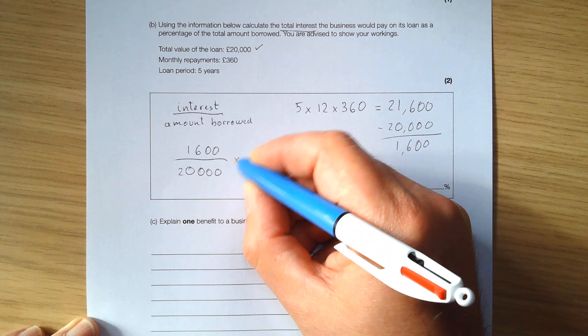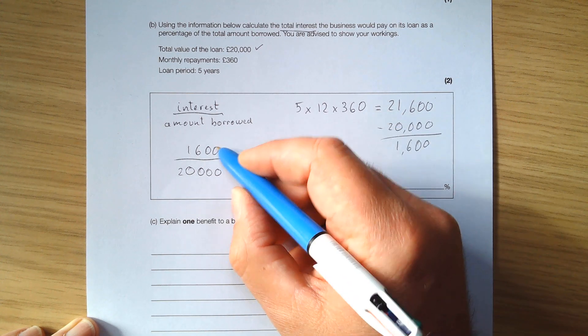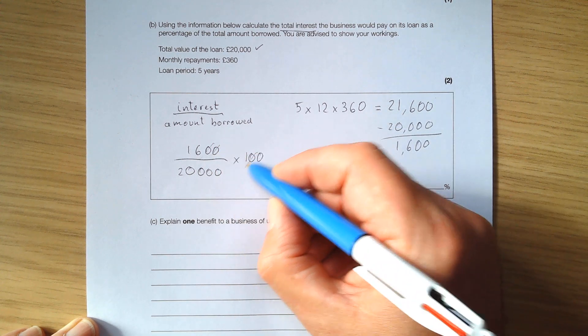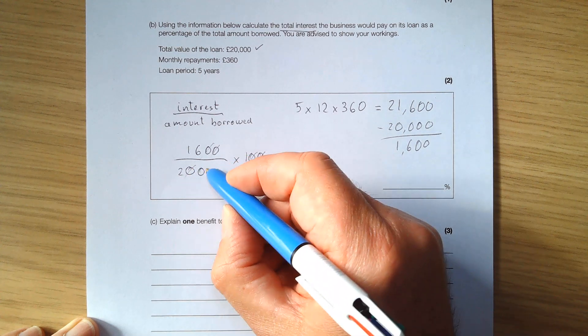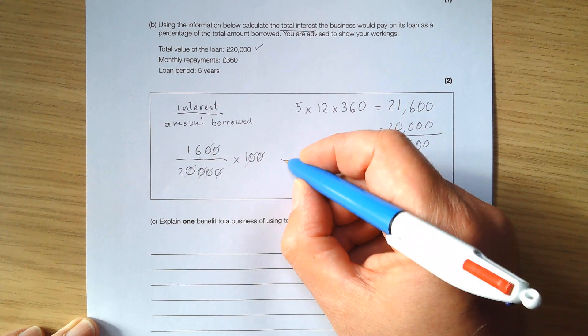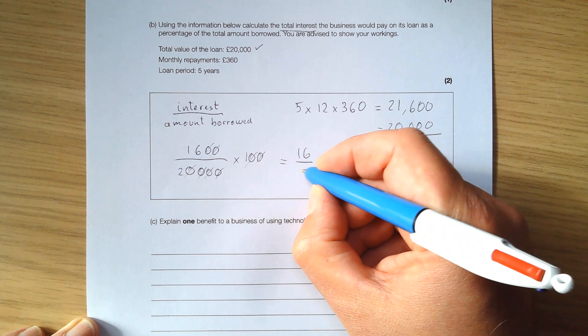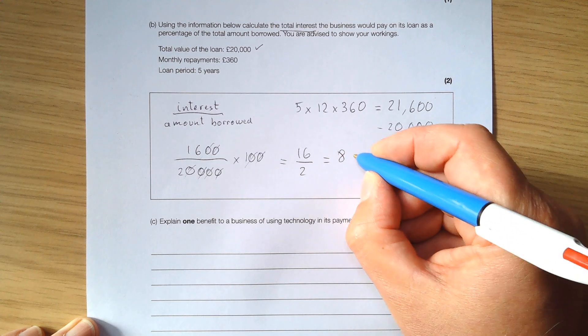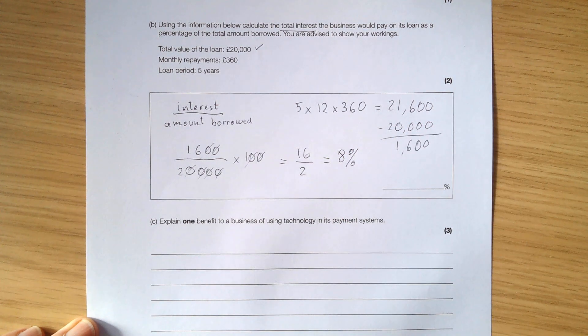It's a percentage, you multiply it by 100. Now here it's quite simple, you've got 1, 2, 3, 4, four zeros. 1, 2, 3, 4, so this is 16 over 2. 8% is the correct answer.